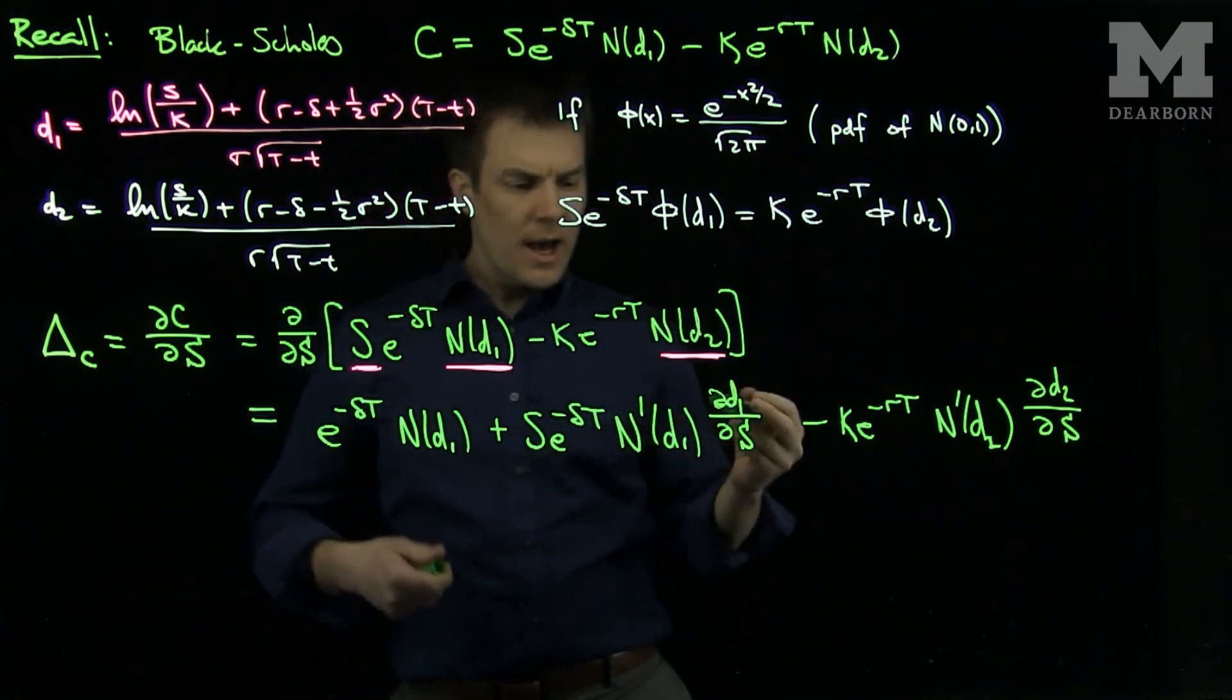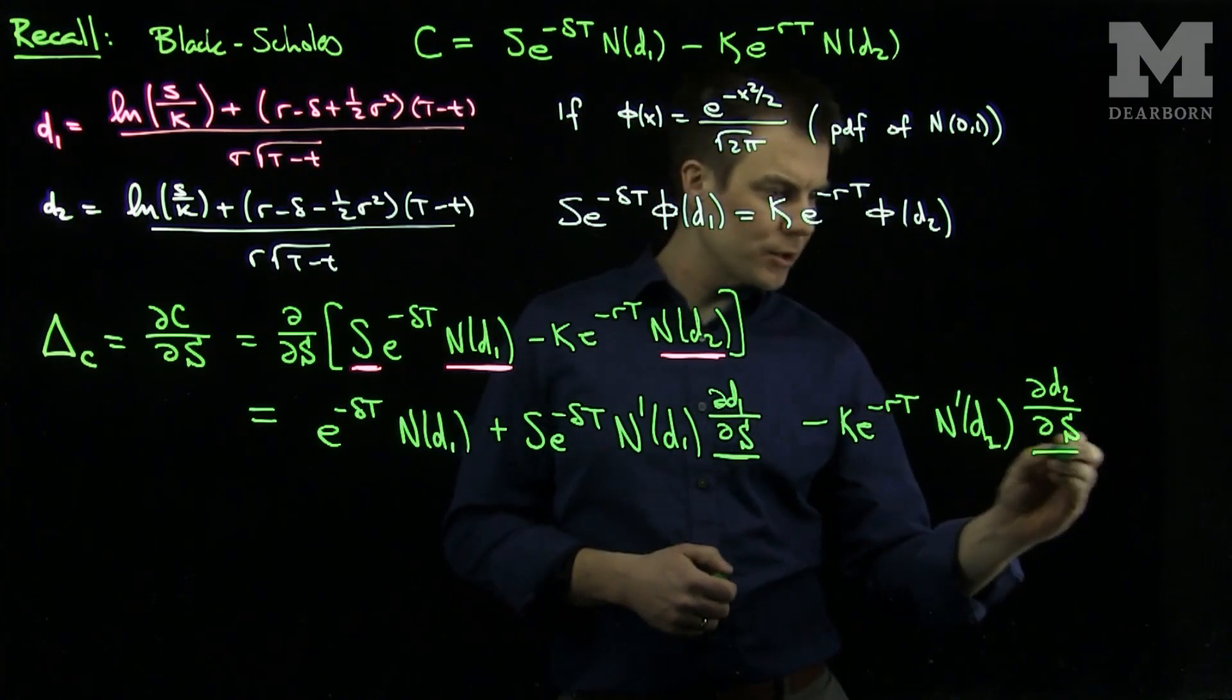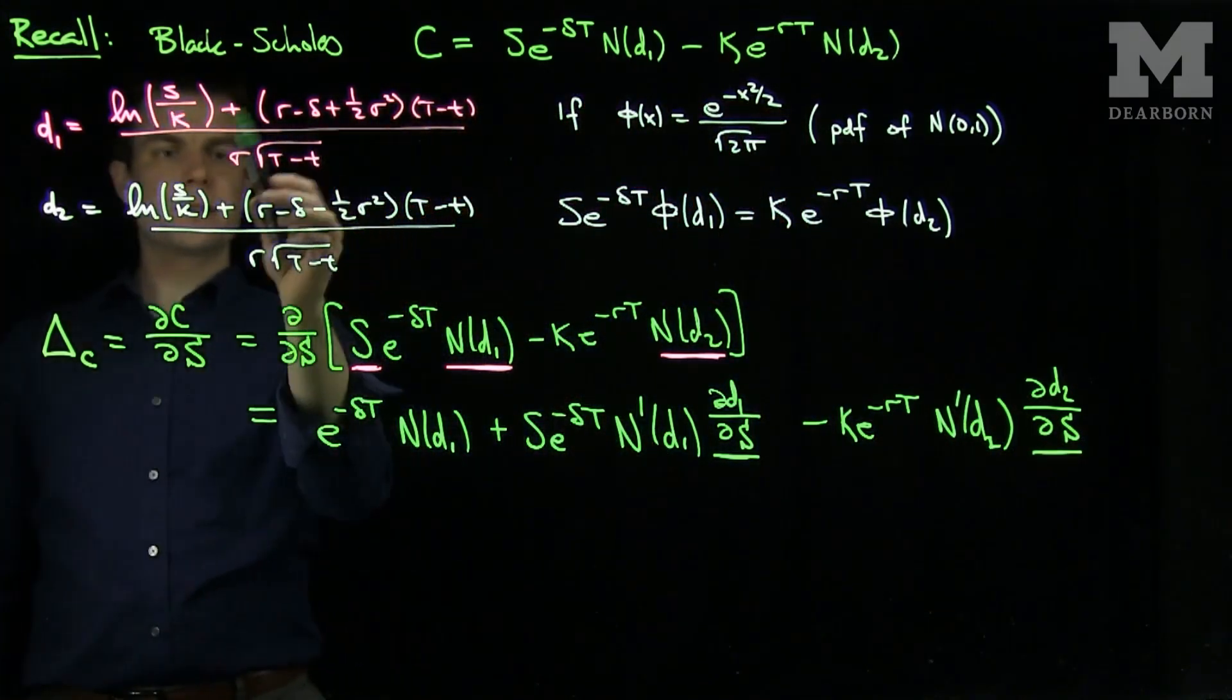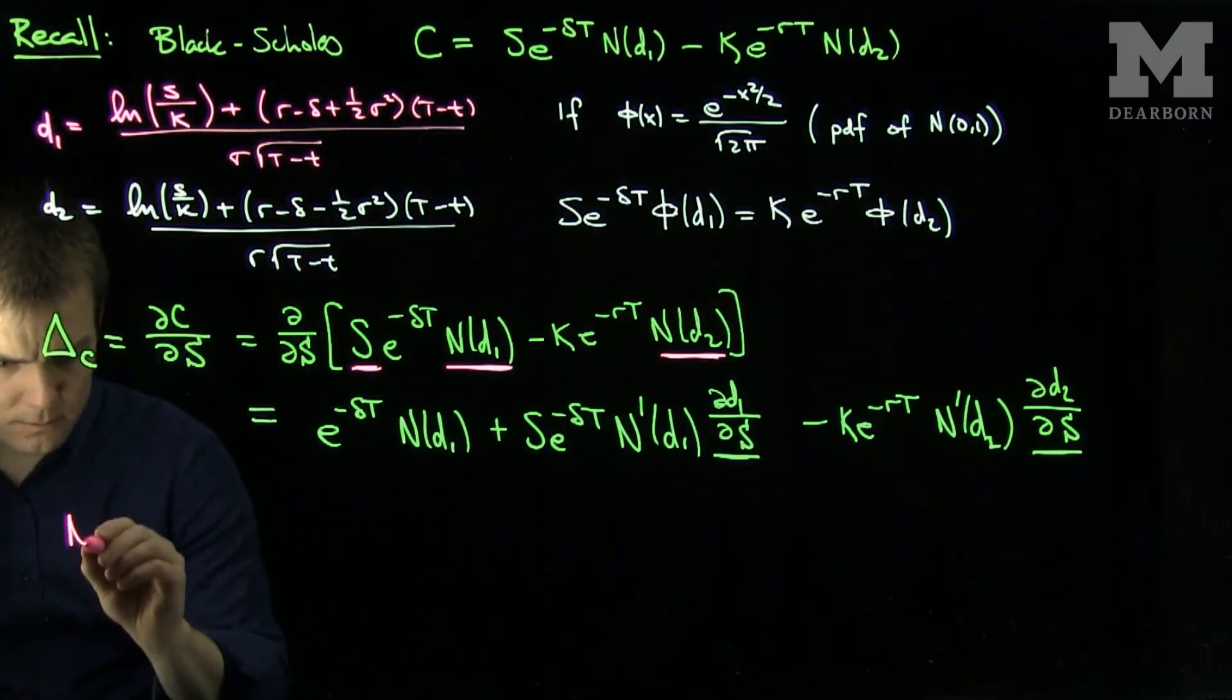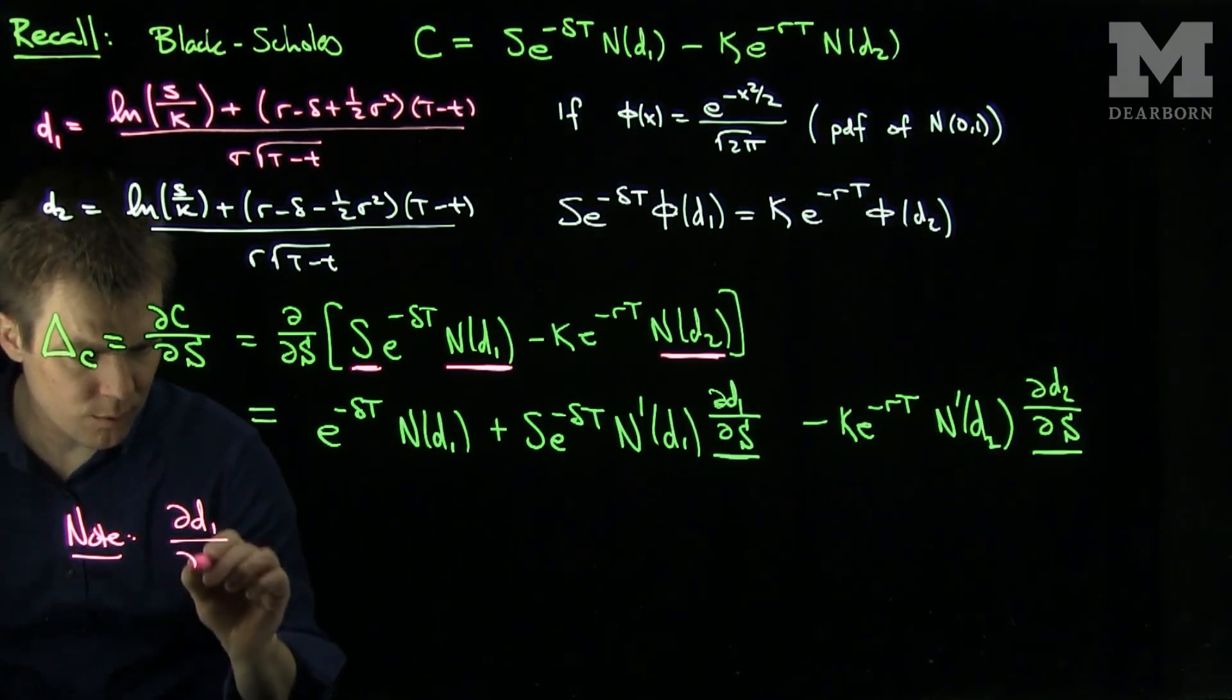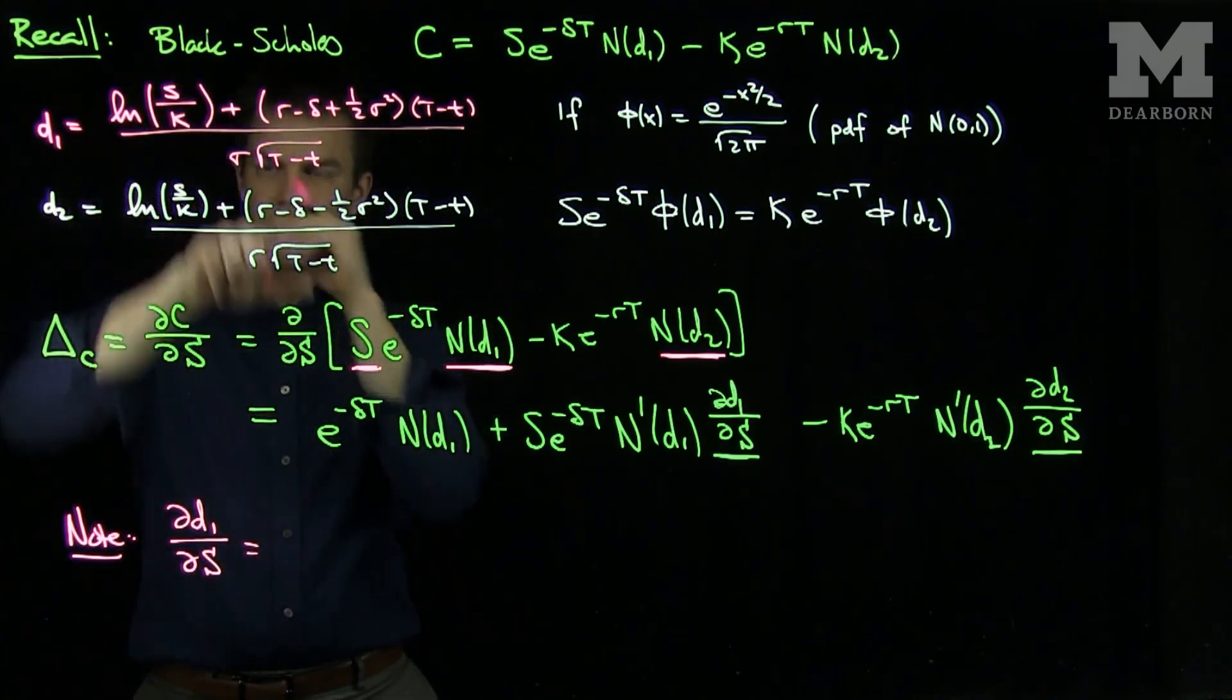So let's continue. So now I need to examine what partial d1 partial s and partial d2 partial s are. So if we look at these formulas, we see that none of these things over here depend on s. So note partial d1 with respect to s, if we look at it, we'll have the log of s over this factor over here.